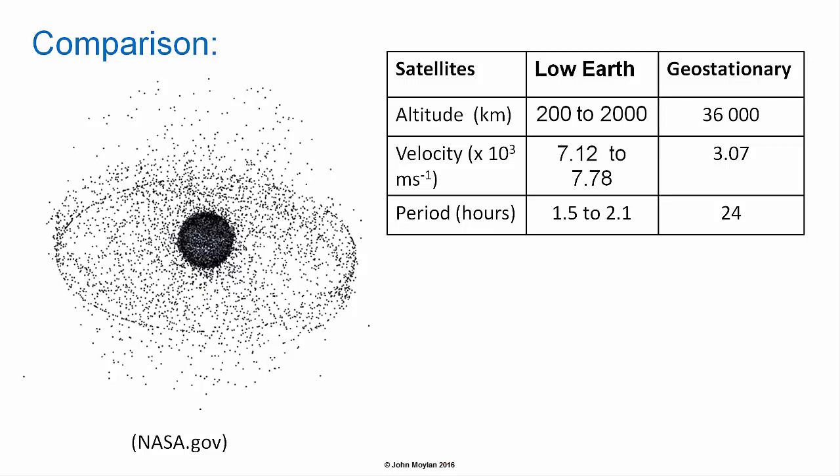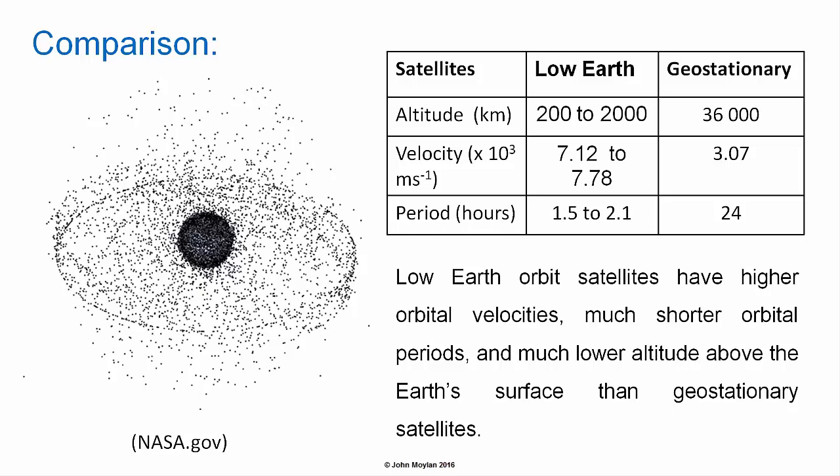Low Earth orbit satellites orbit between 200 and 2,000 kilometers above the surface of the Earth, whereas geostationary satellites orbit at around 36,000 kilometers. Orbital velocities for LEO satellites range from approximately 7.12 to 7.78 × 10³ meters per second, compared to 3.07 × 10³ meters per second for geostationary satellites. LEO orbital periods range from approximately one and a half to just over two hours, versus the 24-hour period of geostationary satellites.